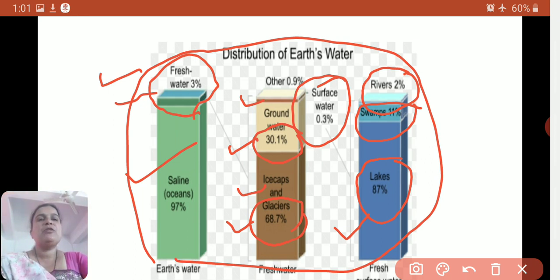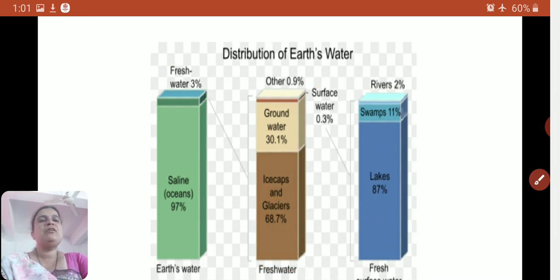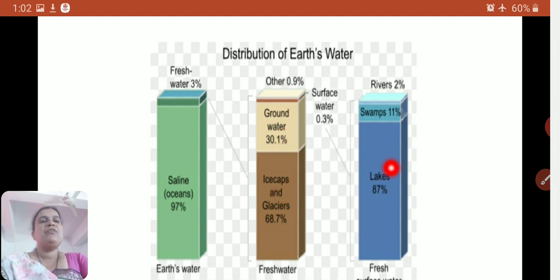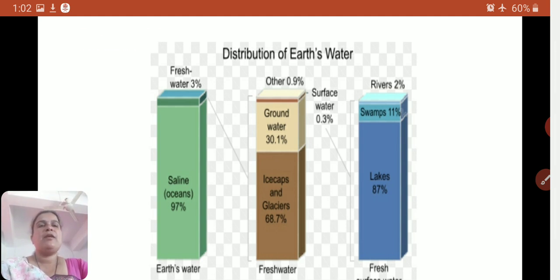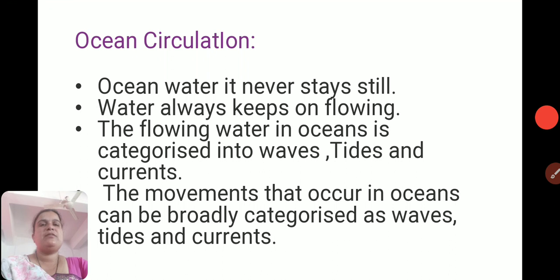Among this 3% water, much is in the form of ice caps and glaciers, groundwater, then lakes, rivers, swamps, etc. That's why there is a need to raise awareness again and again about safe water and safe life.